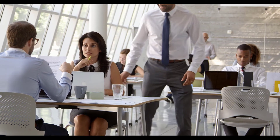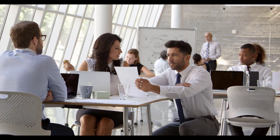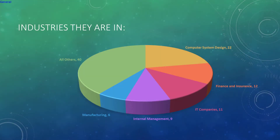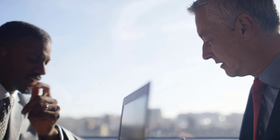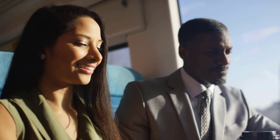Work Environment: Computer and information systems managers held about 482,000 jobs in 2020. The largest employers were: computer systems design and related services at 22%, finance and insurance at 12%, information technology companies at 11%, management of companies and enterprises at 9%, and manufacturing at 6%. Most computer and information systems managers work full-time. If problems arise, managers may need to work more than 40 hours a week to develop solutions.